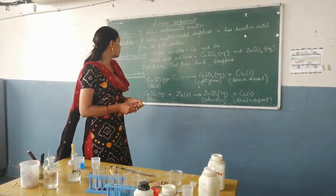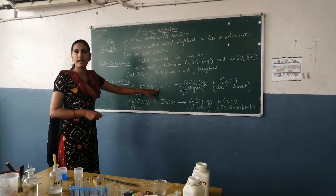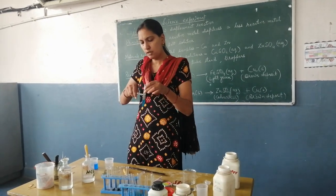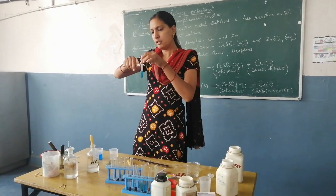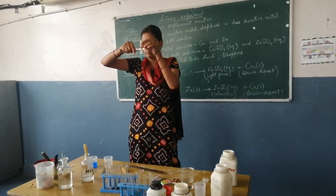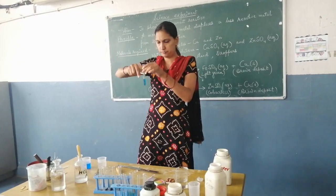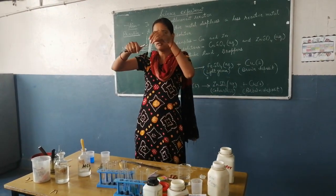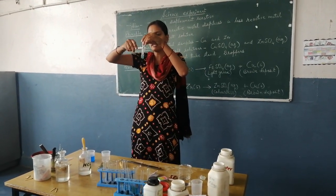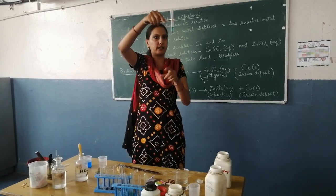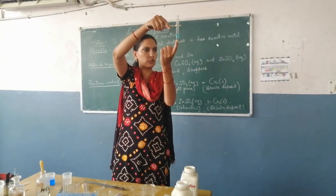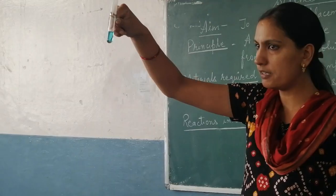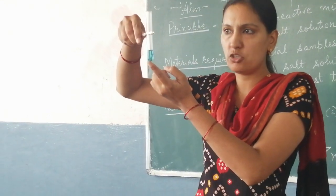First of all, I will show you how copper sulfate solution reacts with iron. I have already performed this experiment and I will show you the result. This is the copper sulfate solution, and I have kept some iron nails in it. You can see the iron nails in this test tube, and its color has been changed.